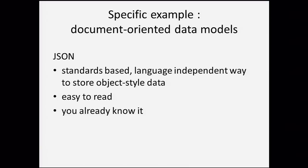We want to store object-style data — all languages today are sort of object-oriented — without a lot of work. But at the same time, we don't really want to pull in methods or class hierarchies, as that would be too tightly coupled to a specific programming language. One of the big ideas in databases is separating the data from the code — I should be able to look at the data and understand it without reading your code. That's certainly the case in relational, and I think it's important that it's not lost here.